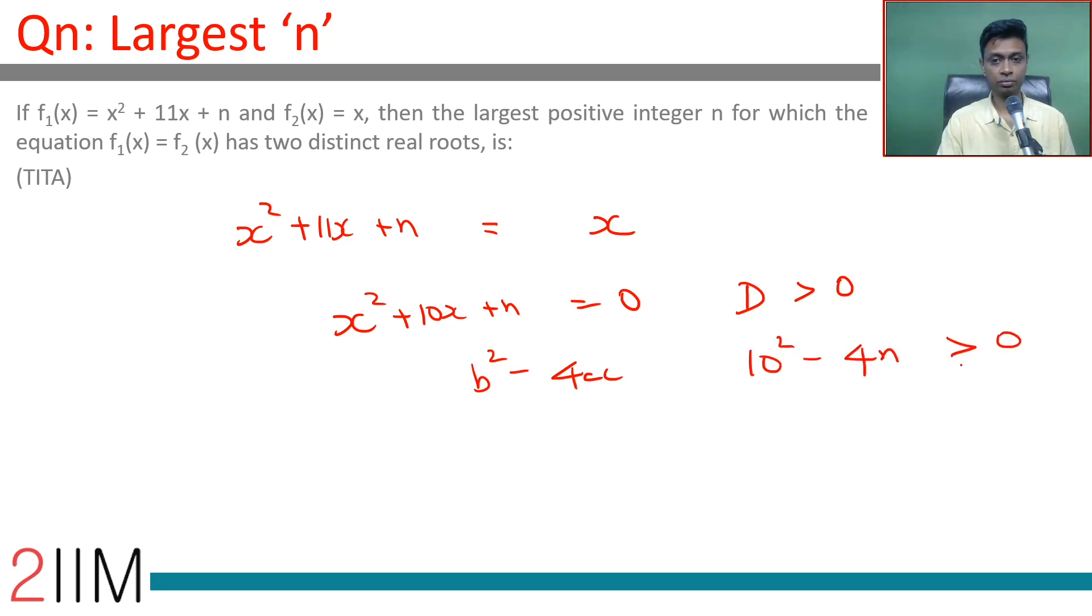greater than 0. 100 minus 4n greater than 0, or 25 minus n greater than 0, or the maximum positive integer n can take is 24. If n were 25 this will have equal real roots. Anything more than 25 this will have no real roots.